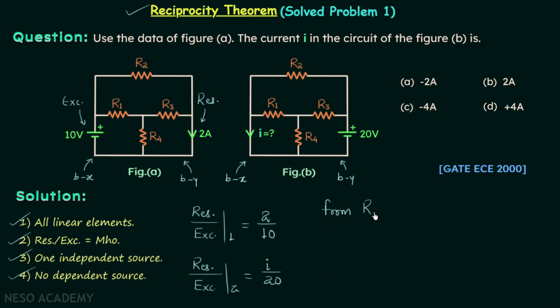Now from reciprocity theorem the ratio of response to excitation will remain the same in the 2 networks. So we will have 2 over 10 equal to i over 20. From here we will have current i equal to plus 4 amperes. This is our answer and when you look at the given 4 options you will find option D is the correct option.